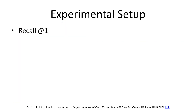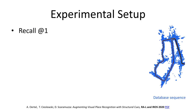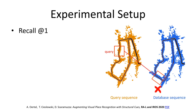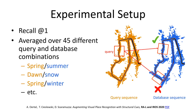The results that follow are obtained from evaluating recall at one of our proposed place recognition system. The system is given the full data record from one sequence as its so-called database, and is then queried with data from a different sequence recorded in a different visual condition. To compute recall at one, the system is asked to provide a single match for every query. We consider the match correct if it is within 20 meters of the query. Recall at one is then the fraction of correct matches across all possible queries, averaged across 45 different query and database sequence combinations.